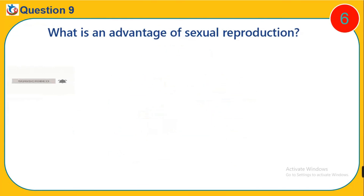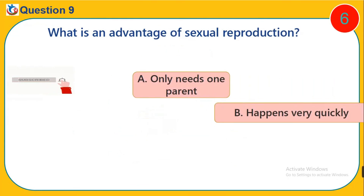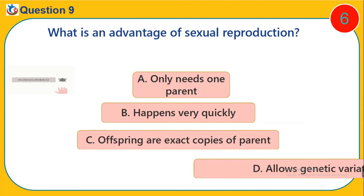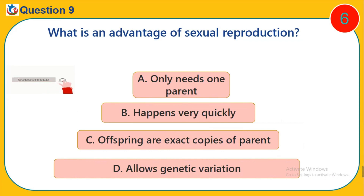Question 9. What is an advantage of sexual reproduction? A. Only needs one parent. B. Happens very quickly. C. Offspring are exact copies of parents. D. Allows genetic variation.